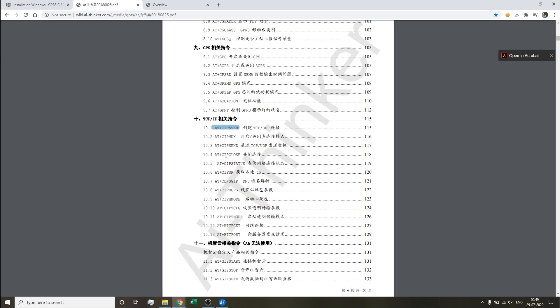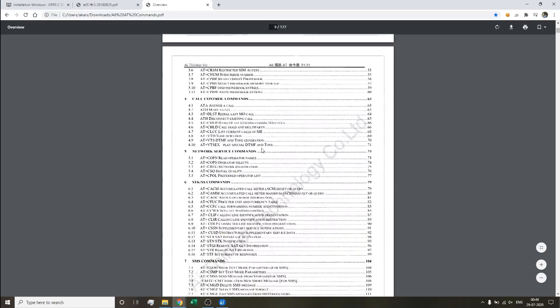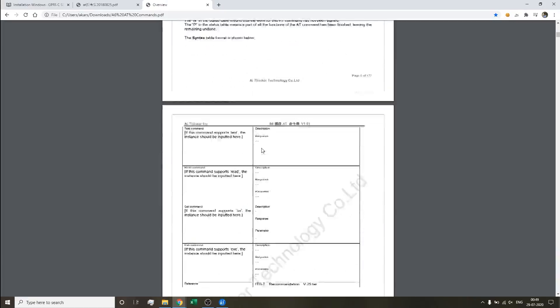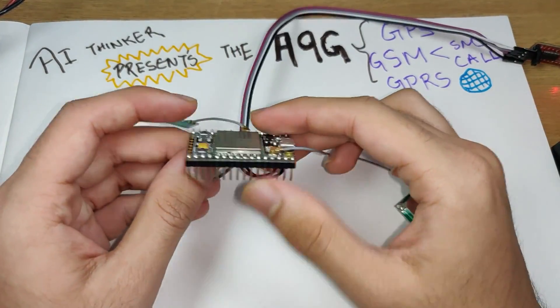The A6 module from AI Thinker is also a GSM and GPRS module, and all the commands that work with the A6 work with the A9G as well for GSM and GPRS. You can use the A6 AT user guide as well because this is in English and will help you in understanding what the A9G GSM and GPRS commands can do. This is a really useful module.